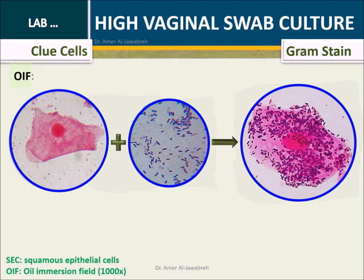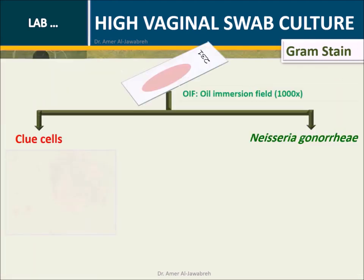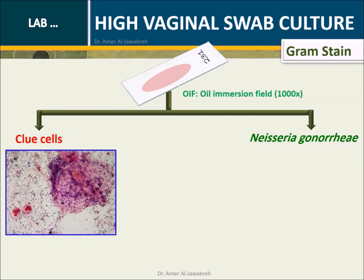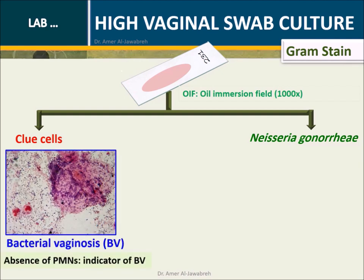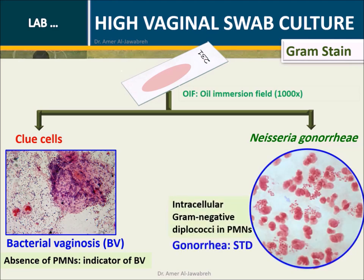Gram stain findings: A clue cell is a cell covered with Gardnerella vaginalis. Under oil immersion, look for clue cells that indicate bacterial vaginosis. Absence of PMNs also indicates bacterial vaginosis. Additionally, look for Neisseria gonorrhoeae — intracellular gram-negative diplococci within PMNs indicate gonorrhea, a sexually transmitted disease.